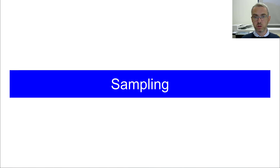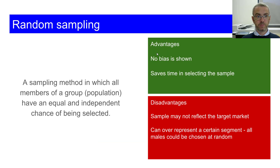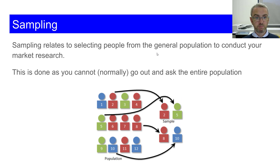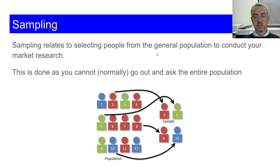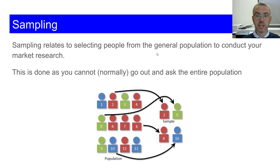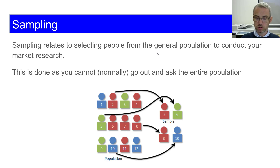There are three different types I'm going to talk about today. Sampling relates to selecting people from the general population to conduct your market research. If you look at the diagram there, it shows you that rather than asking all 12 people, they've picked out four of the 12 to get an opinion or feedback on your product — could be what you want to do, what price it is, anything along those sorts of lines.